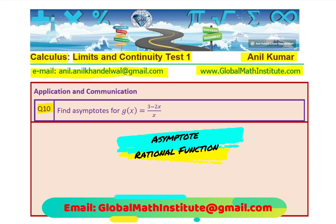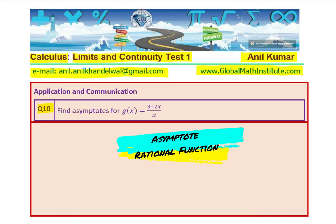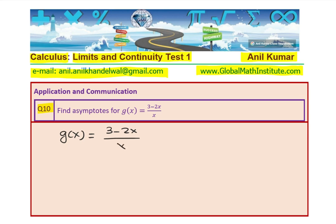Let us see how do we solve such a question. We need to find asymptotes for the rational function given to us. Let me rewrite the function: g of x is equal to 3 minus 2x over x. Now, since x is in the denominator, we know that x is not equal to 0.